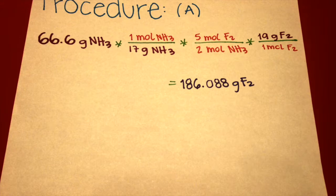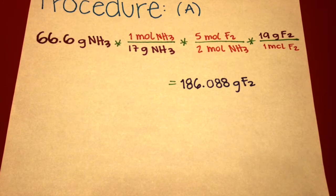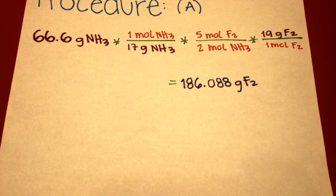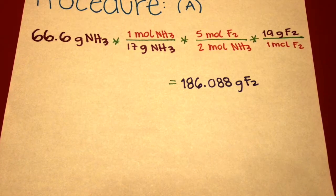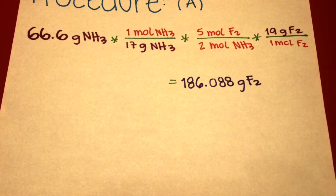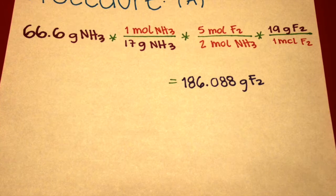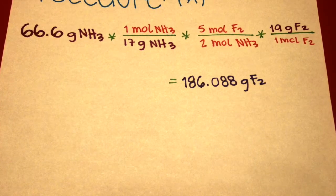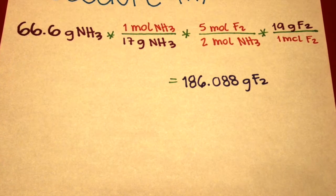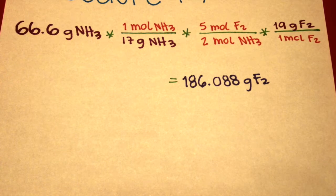This is the procedure for question A. First, I copied the 66.6 grams of ammonia given in the problem. Then I multiplied that times 1 mole of ammonia over 17 grams of ammonia, which is the mass of a single mole of ammonia. Then I multiplied that times 5 moles of fluoride over 2 moles of ammonia, which are the mole amounts in the reaction. Then I multiplied that times 19 grams of fluoride over 1 mole of fluoride, because 19 grams is the mass of a single mole of fluoride. The answer was 186.088 grams of fluoride.